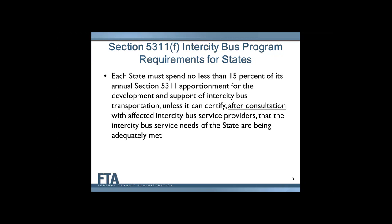The most basic requirement of the program is that every state should be setting aside 15 percent of its Section 5311 rural funds for intercity purposes, unless the intercity needs of that state are already being met. In order to certify that the needs are being met, the state has to conduct a process to determine whether that's the case, as well as consult with the intercity bus providers in the state.